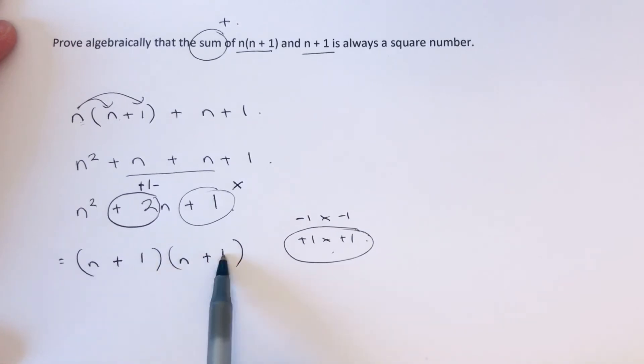So we can write this as (n+1) squared, and this proves that if we add n(n+1) and n+1 together, we get a square number.